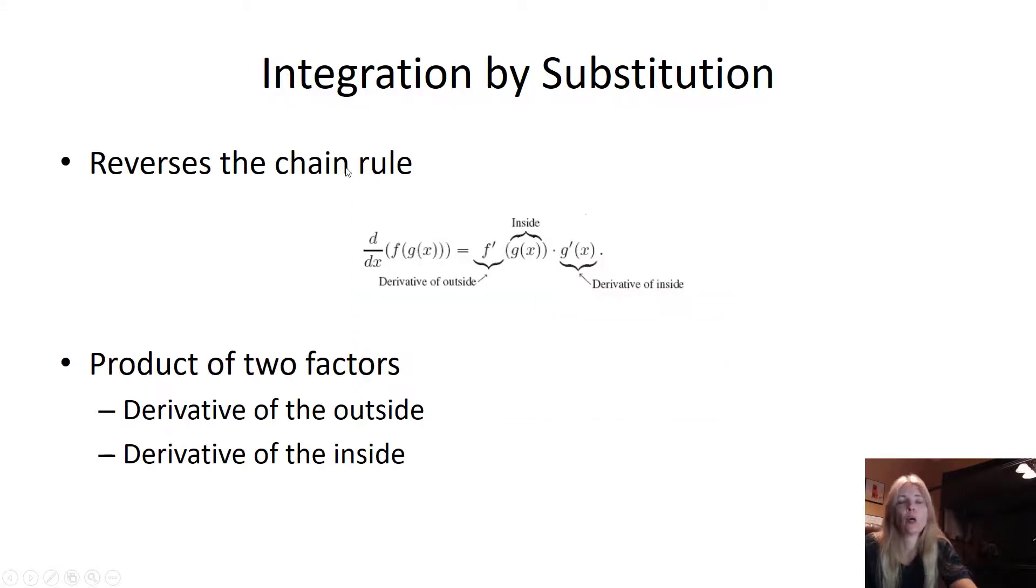So remember the chain rule - this is the reverse of the chain rule. Remember you're given a derivative and you want to find the antiderivative. If you remember with the chain rule, you had the derivative of the outside times the derivative of the inside, and that's what this is showing.